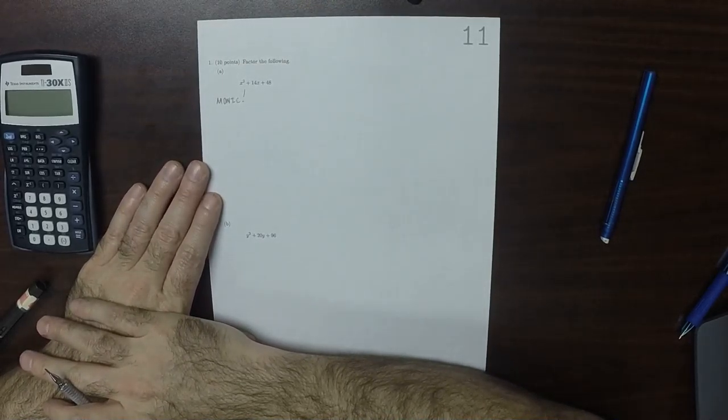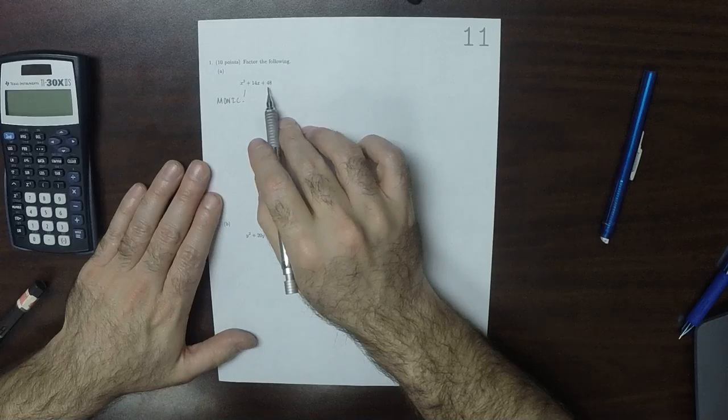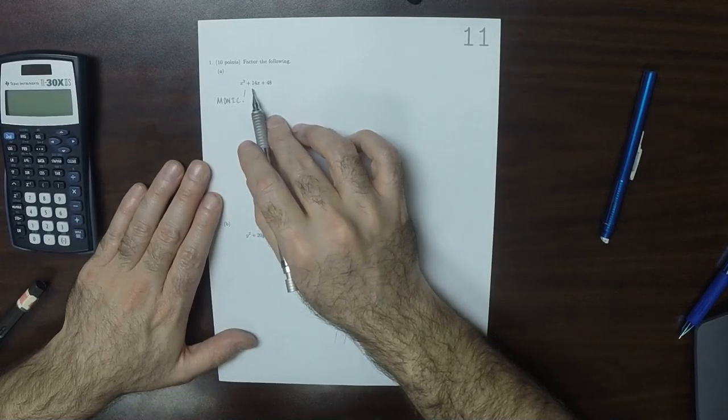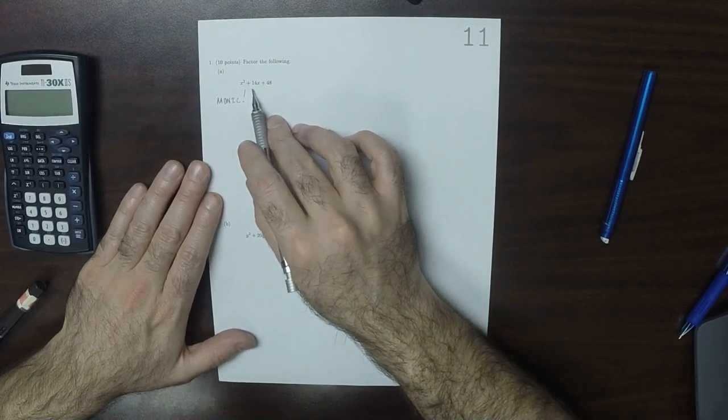That's terrific, because that means we can use the easy way. So we're looking for two numbers whose product is 48 and whose sum is 14. How about 6 and 8?